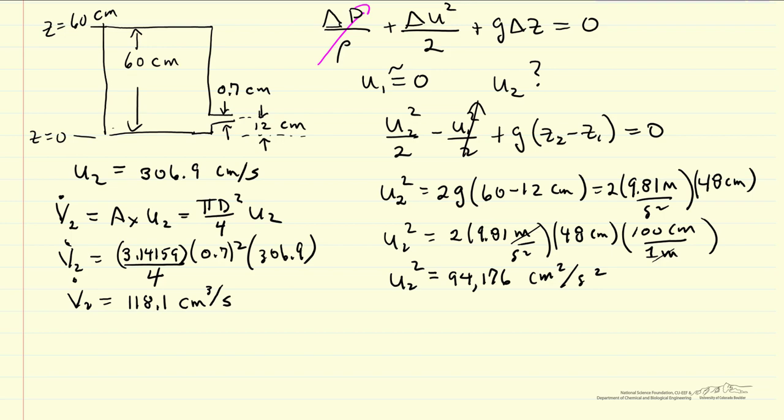Now we want 200 milliliters to flow out, so 200 milliliters. Well, one milliliter is the same as one centimeter cubed, and 118.1 centimeter cubed per second gives us, check units, 1.7 seconds.